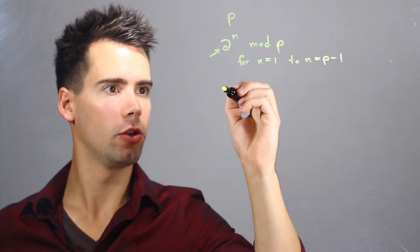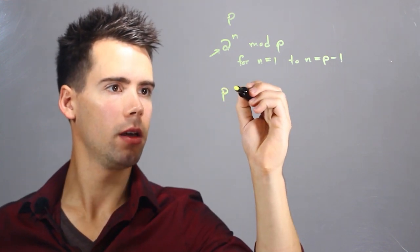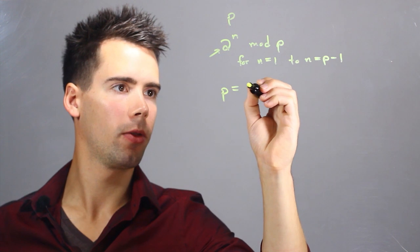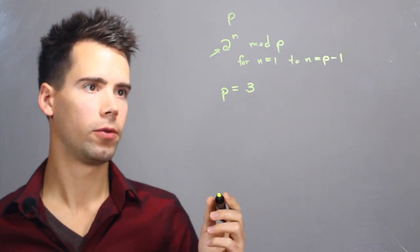As an example we can choose a prime number p being equal to 3 and we can search for primitive roots of 2.